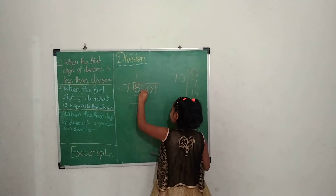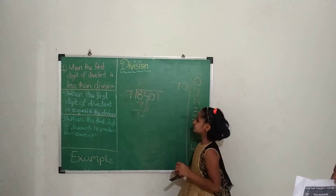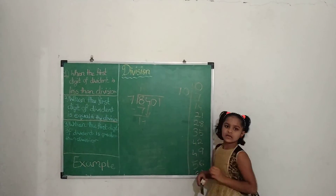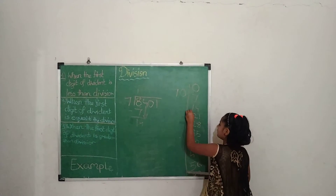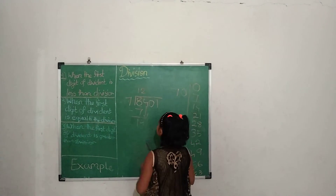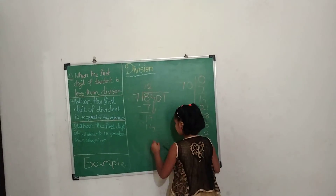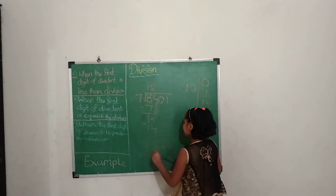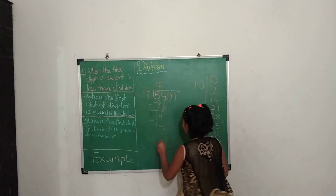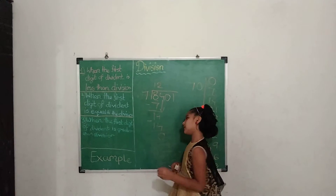Now we bring 4 down, making it 14. In the 7's table, we see 7 twos are 14. So 2 will be written in the quotient and 14 will be written below. We subtract: 4 minus 4 equals 0, and 1 minus 1 equals 0.